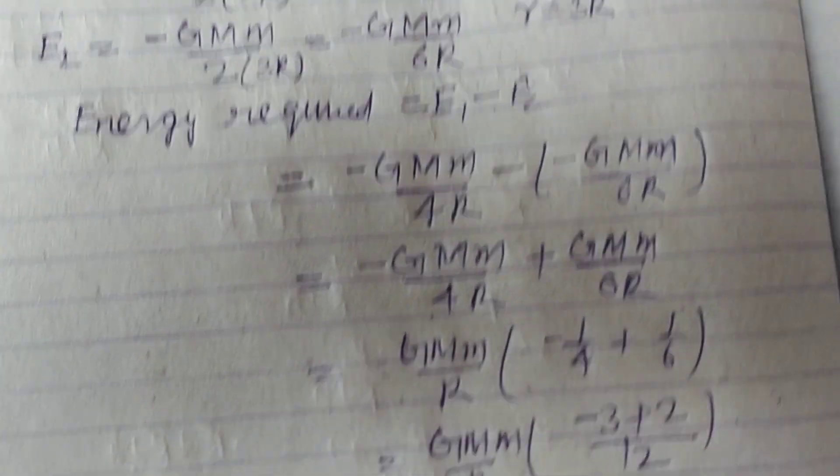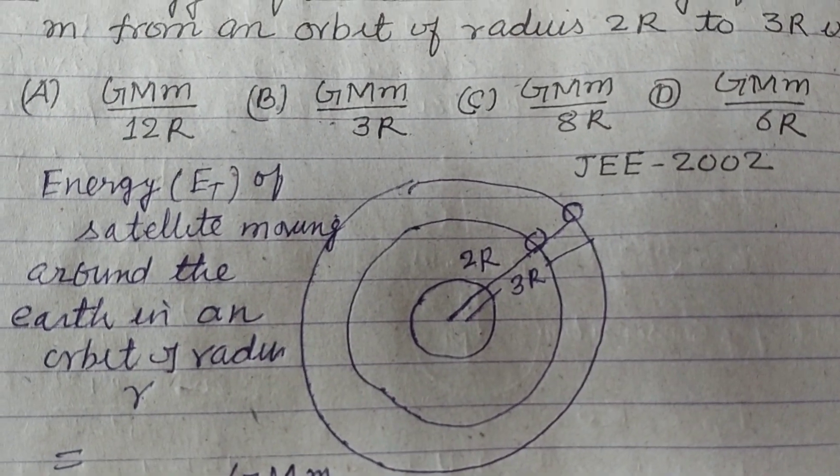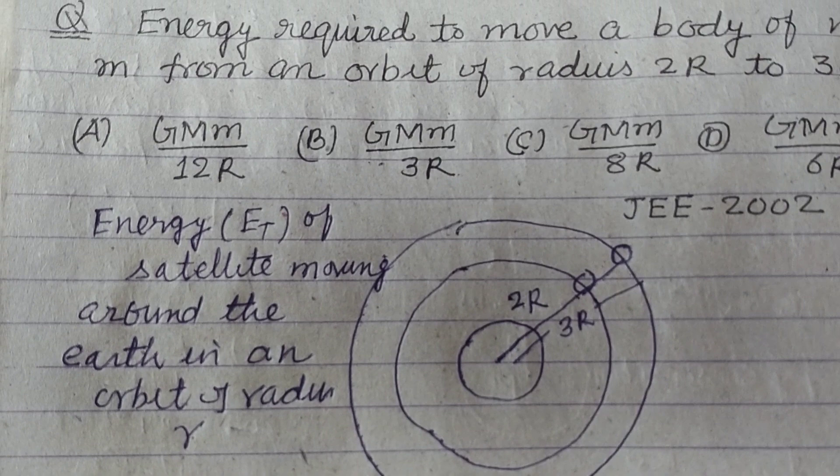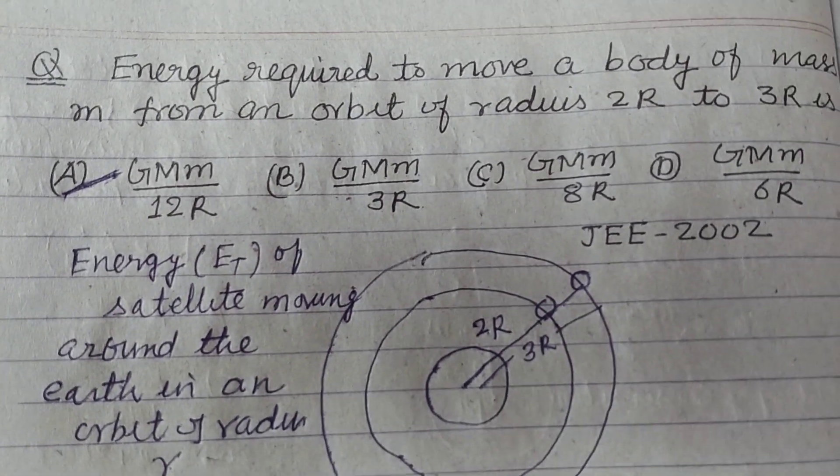So this is the required answer, GMm upon 12R, which is found in option A. So option A of this question is correct.